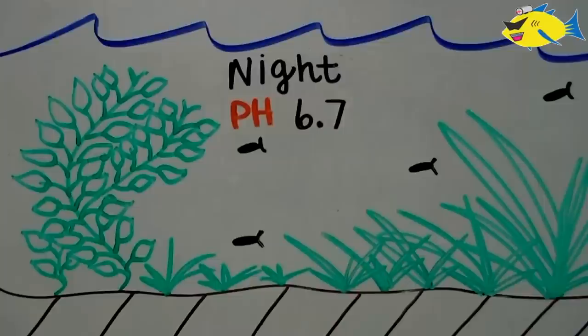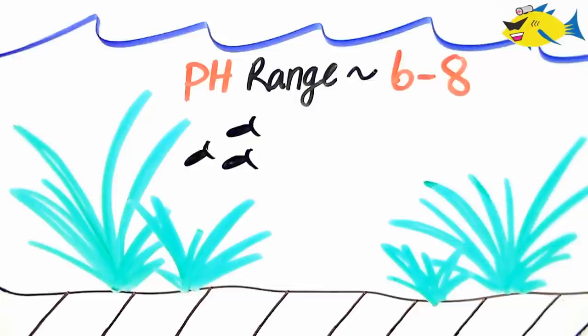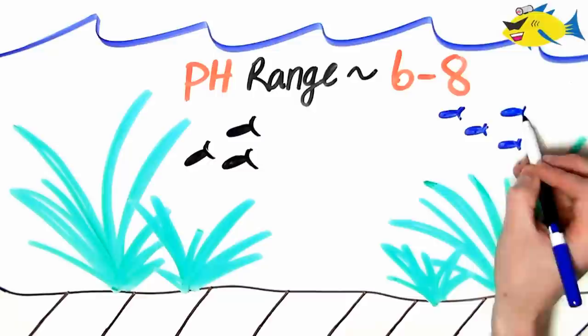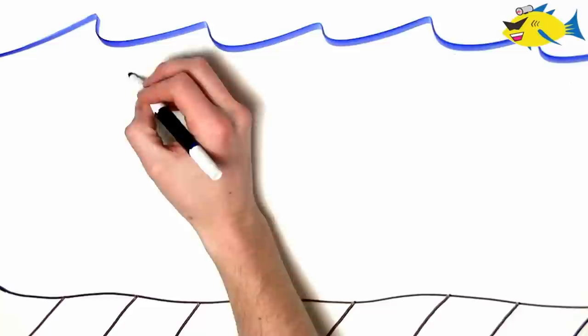A safe pH range in a freshwater aquarium can vary between 6 and 8 depending on several factors. Some species of fish are extremely sensitive to pH and may require a narrower range to remain healthy, so don't forget to do your research before buying your fish. Now let's talk about water hardness.